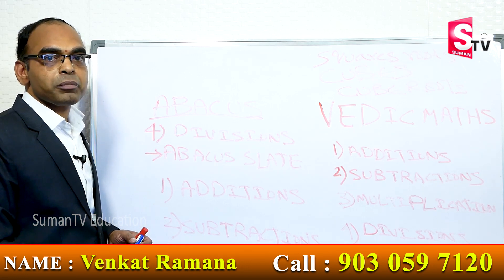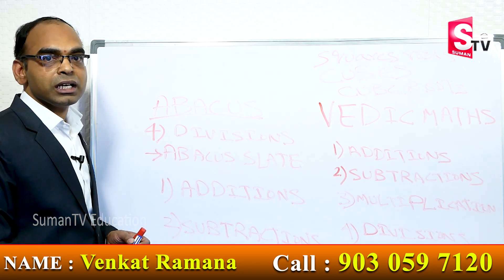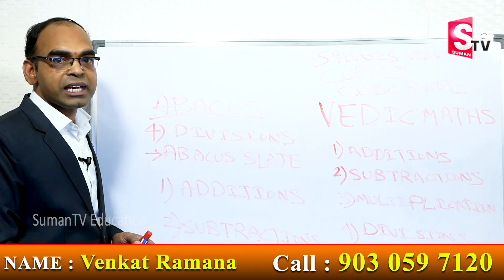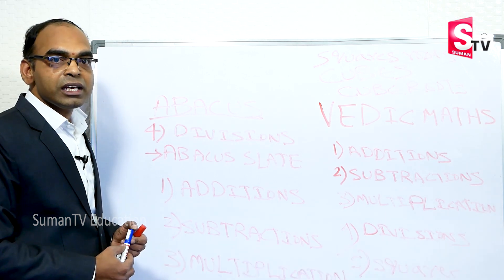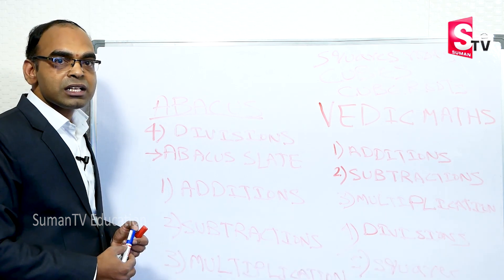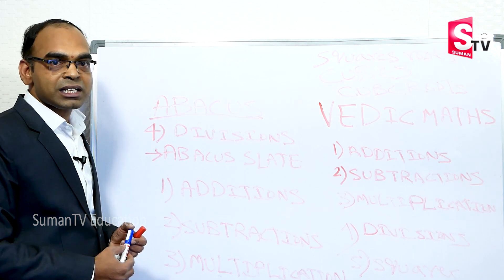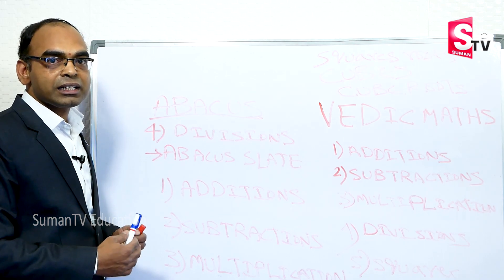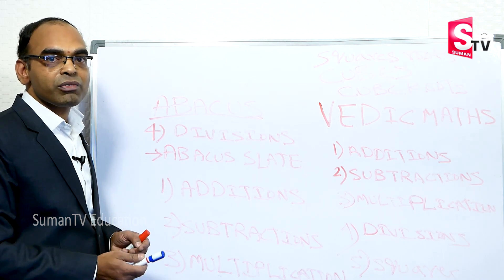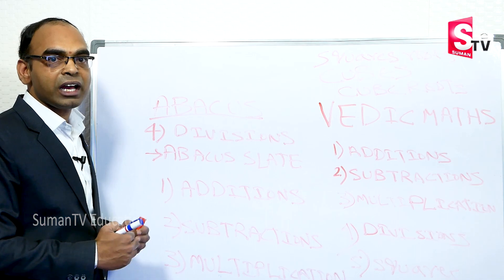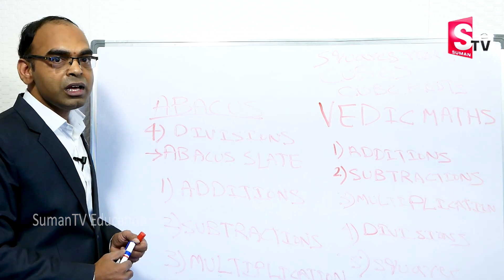In Abacus we can perform only four operations: addition, subtraction, multiplication, and division. In the initial days, we will depend on the Abacus slate. At later levels, we will imagine the slate and we will perform the operations.